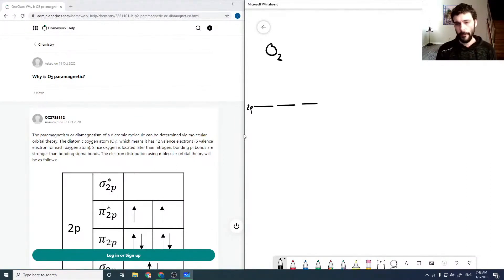So there's our 2p and our 2s. This is one oxygen atom, and here is our other oxygen atom. So we're going to get sigma, sigma star, and in this case we get sigma, pi, pi, pi, pi.